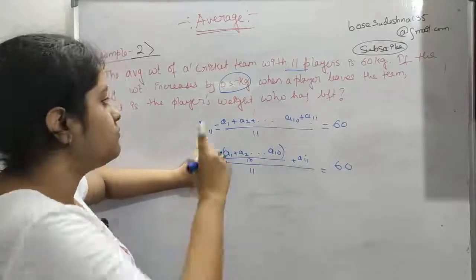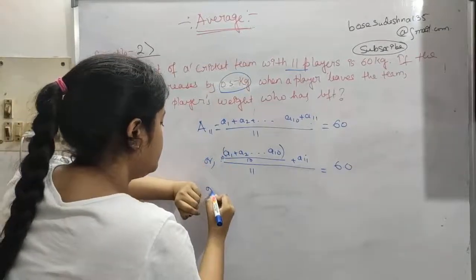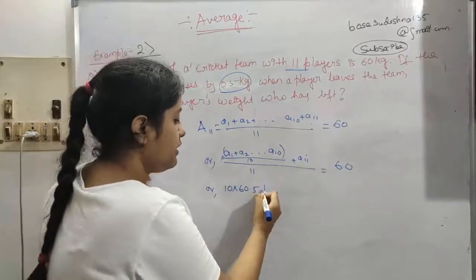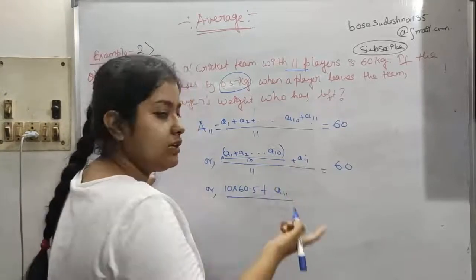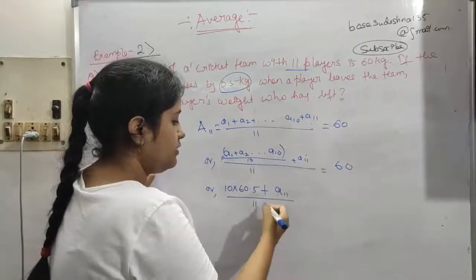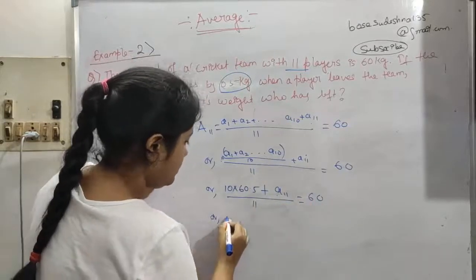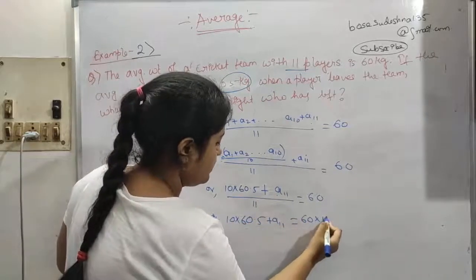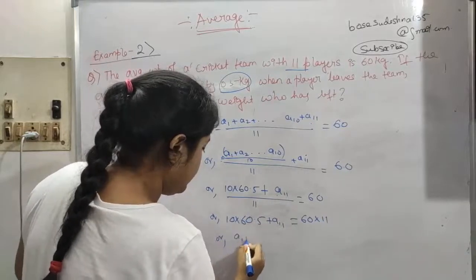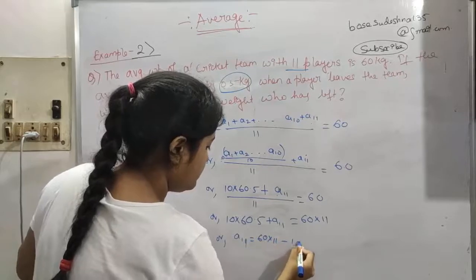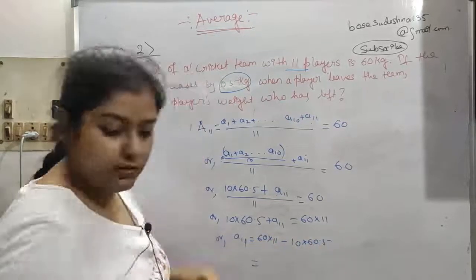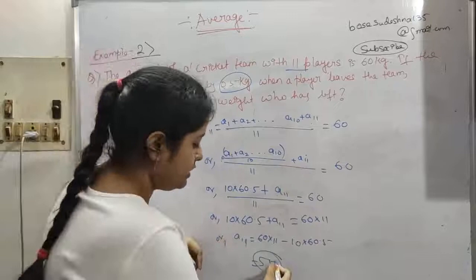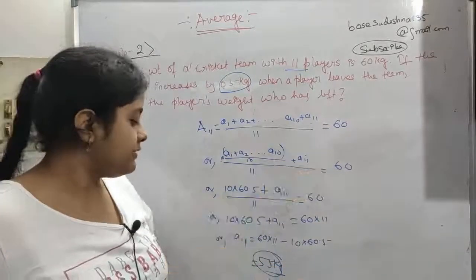The average of 10 players would increase by 0.5, so total was 60 and if increased it is now 60.5. So: 10 × 60.5 + a11 = 60 × 11. Therefore a11 = 60 × 11 − 10 × 60.5, and the answer is 55. The weight of the player who left is 55 kilos.